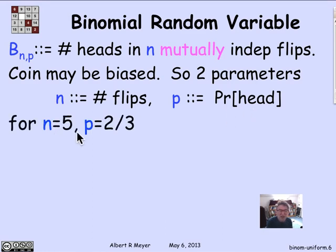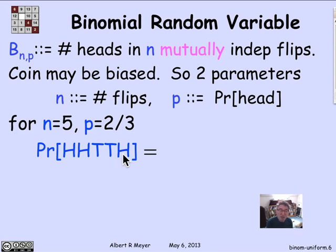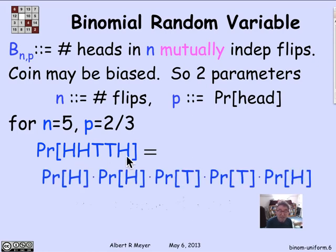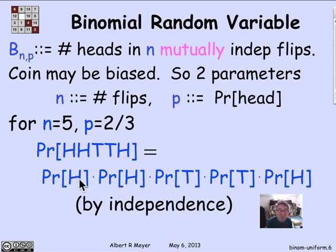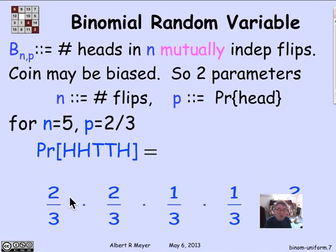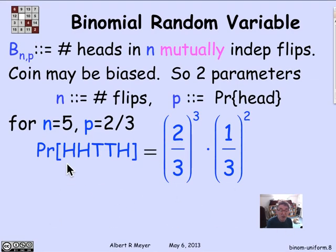For example, if N is 5 and P is 2/3, what's the probability that we consecutively flip head, head, tail, tail, head? Because the flips are independent, the probability is simply the product: P(H) × P(H) × P(T) × P(T) × P(H). Replacing each term, 2/3 is the probability of a head and 1/3 is the probability of a tail. So the probability of H, H, T, T, H is (2/3)³ × (1/3)².